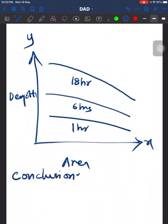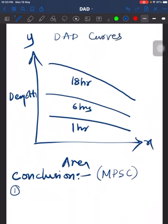What conclusions can we draw from this? The conclusions are very important to know because if we don't know them, we will not be able to answer the questions in the examination. The first conclusion which we can draw from the DAD curve is: as the area increases, depth decreases.